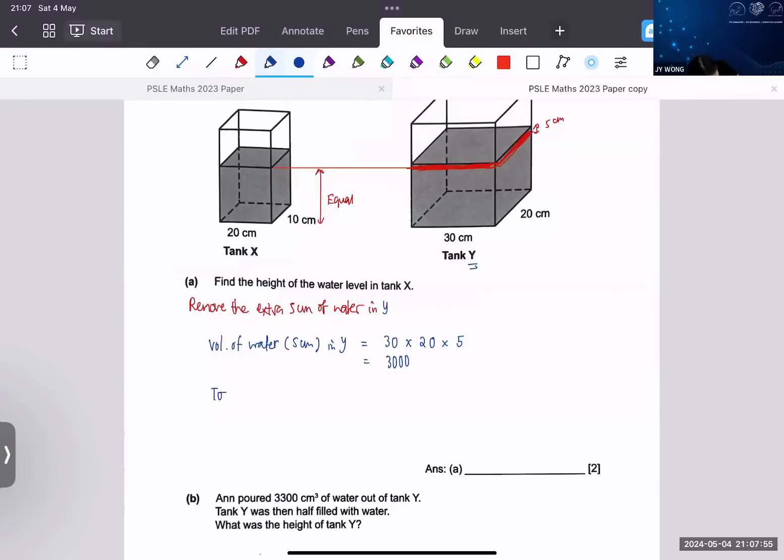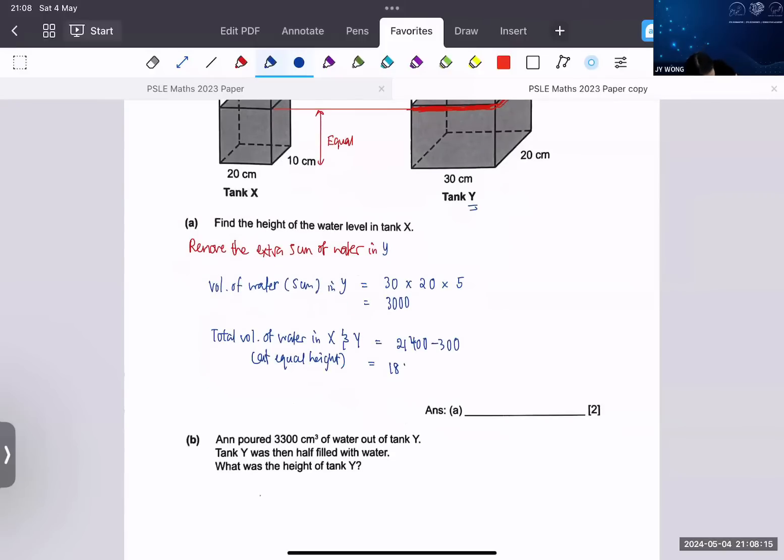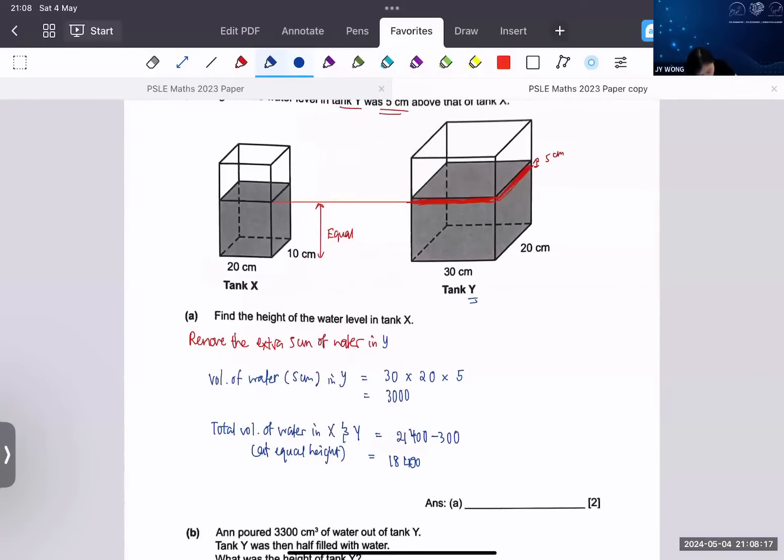Then at the same height, we are supposed to find the total volume of water. So total volume of water in X and Y at equal height would be 21,400 minus 3,000, that will give you 18,400.